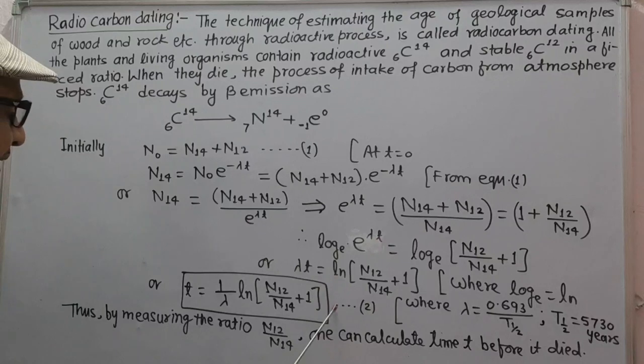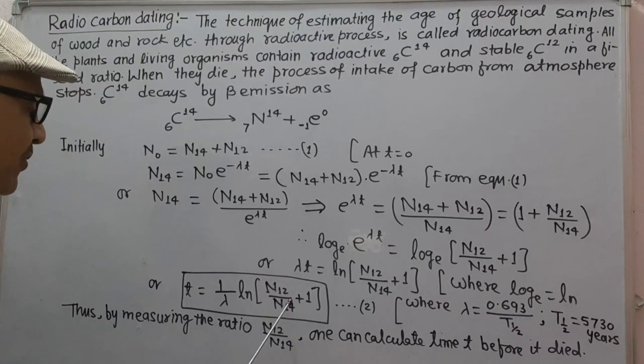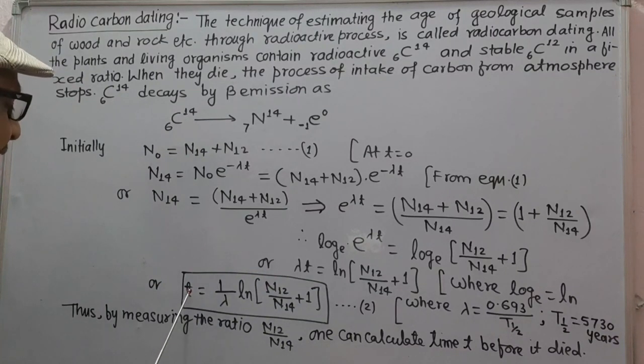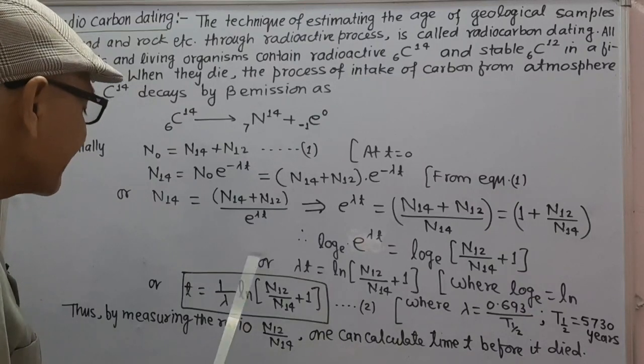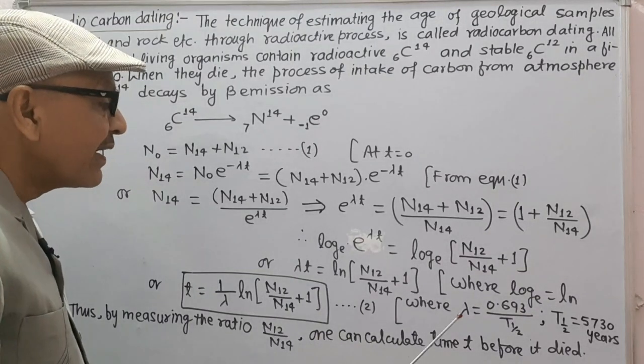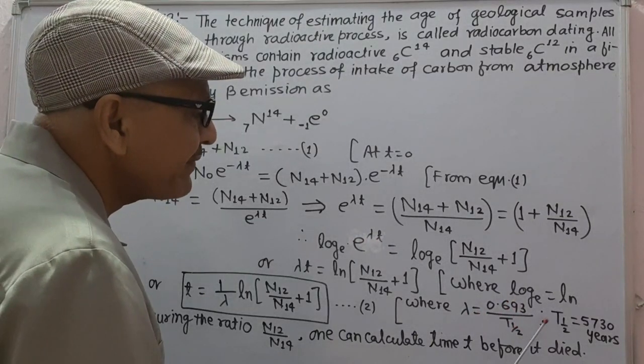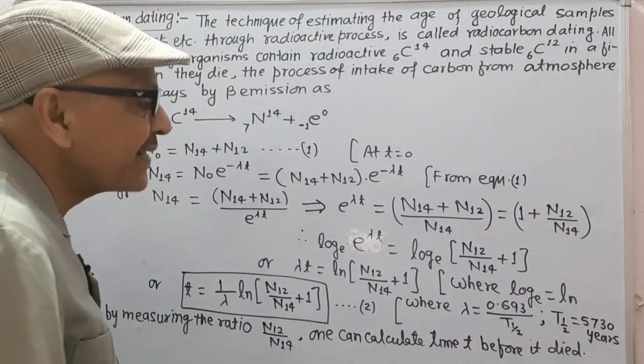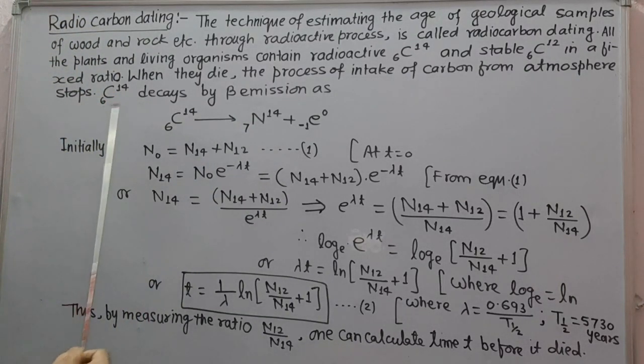So by measuring the ratio of N12 to N14, we can find out the time t before it died, that is the age of the fossil, where lambda equals 0.693 upon t-half, and t-half is 5730 years, which is the half-life period of radioactive carbon C-614.